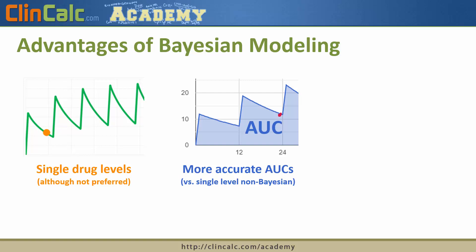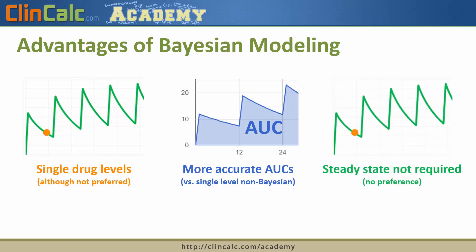Historically, we would only get a trough level and then estimate the peak, but our ability to accurately estimate that peak was not very good. With Bayesian modeling, we're able to have more accurate estimates of the peak, the trough, and therefore the AUC of vancomycin. It's also very useful that you don't have to be at steady state, allowing us to estimate a patient's pharmacokinetic parameters earlier rather than waiting for steady state and drawing a single trough level, which was the historical method.